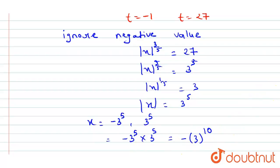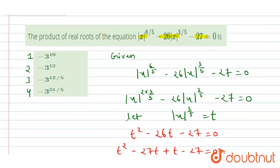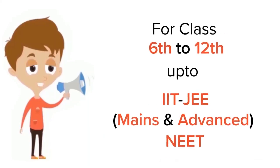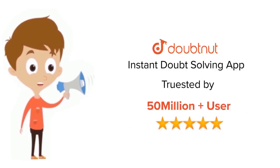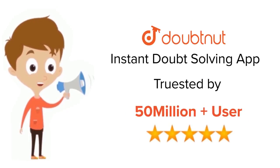Our answer -3^10 matches option number one, which is the correct answer. Thank you. For class 6 to 12, IIT JEE, and NEET level, trusted by more than 5 crore students — download the DoubtNet app today.